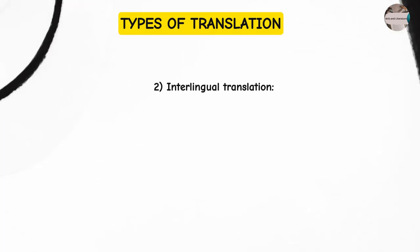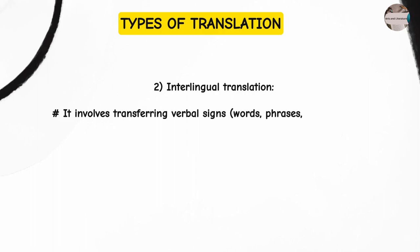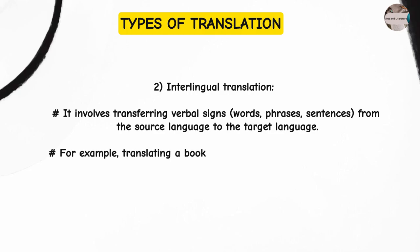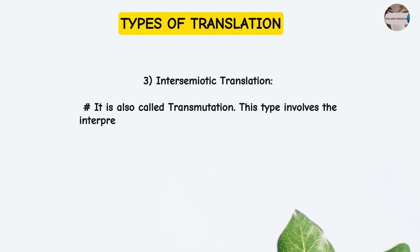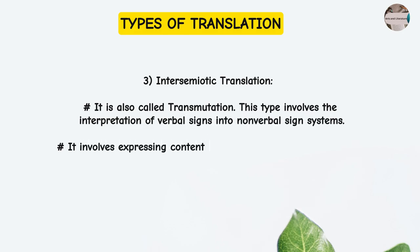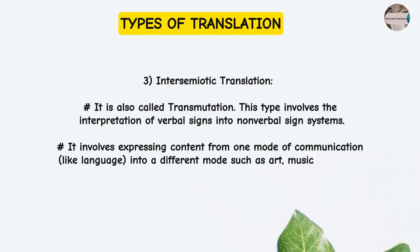The second type is interlingual translation. It involves transferring verbal signs — words, phrases, sentences — from the source language to the target language. For example, translating a book from English to Spanish or vice versa. The third type is intersemiotic translation, also called transmutation. This type involves the interpretation of verbal signs into non-verbal sign systems — expressing content from one mode of communication, like language, into a different mode such as art, music, or dance.